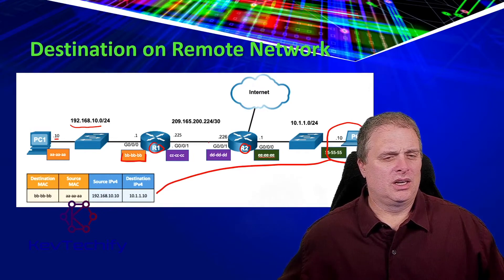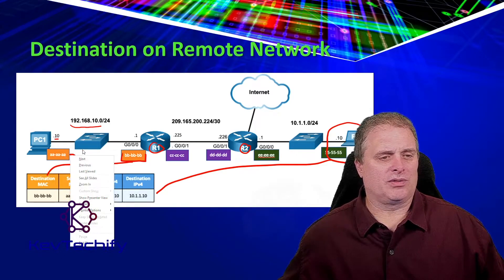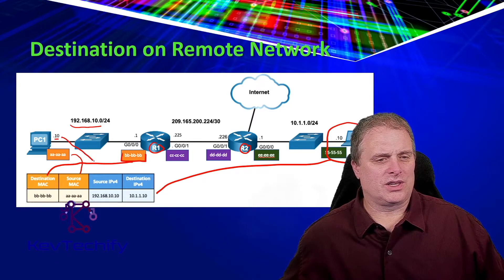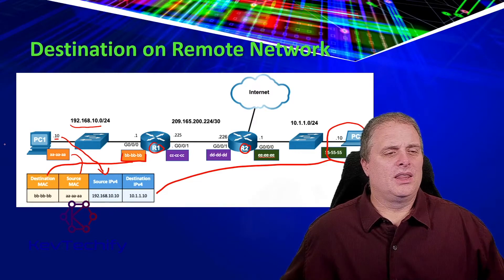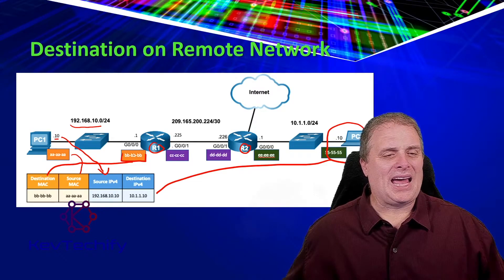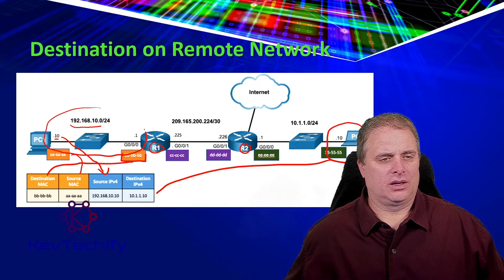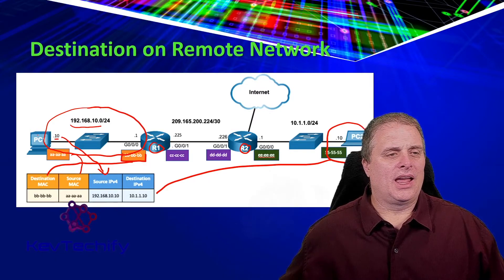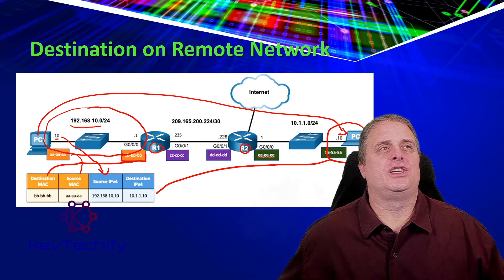This is PC2 — this is our destination MAC address. Our source is where we're coming from, and this is our source IP address. Notice the Layer 2 MAC address is only good on our local area network. The Layer 3 address is concerned with end-to-end connectivity — going from PC1 to PC2.